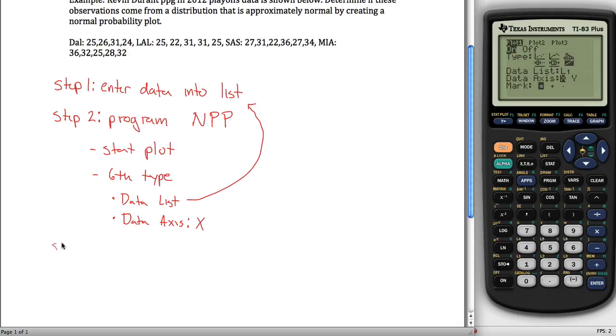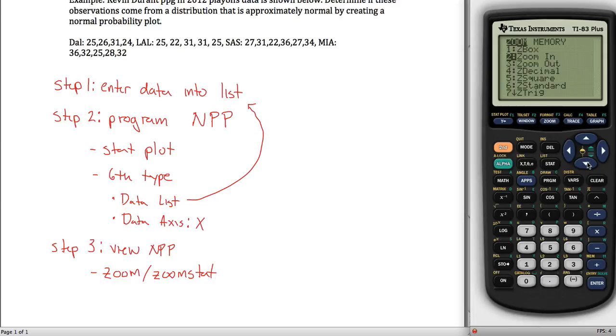Step three is to view your normal probability plot. The way you do that is zoom stat. What I mean by that is if you hit the zoom key up here and then the ninth thing on the list is zoom stat, if I hit enter, there's my normal probability plot.